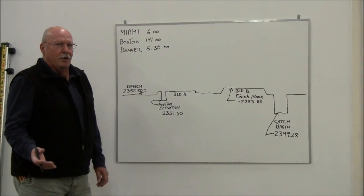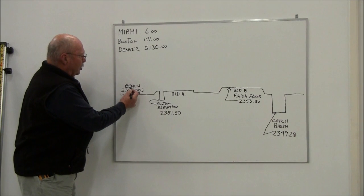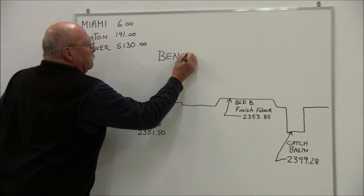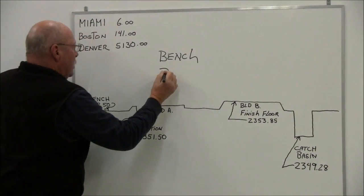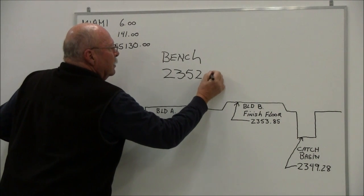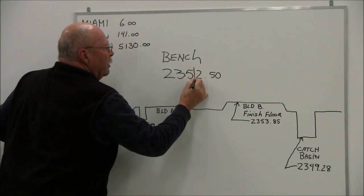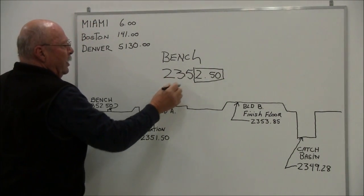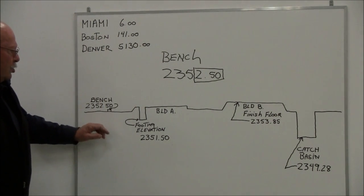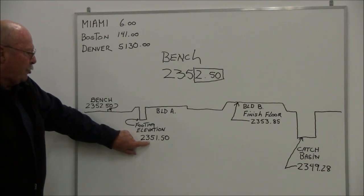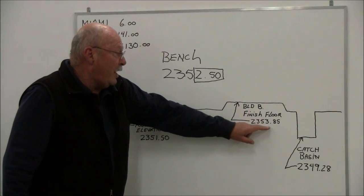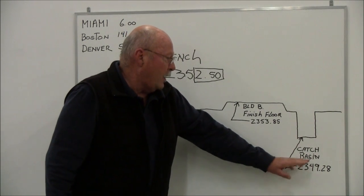Well, the grade rod's obviously not 2,000 feet high, so what we're going to use is the whole number and the last two digits. So I've got a bench on this job of 2,352 feet and 50 hundredths. What we're really going to be looking at is 250 on our grade rod, which is going to represent 2,352.50. For example, on this particular illustration, if I have a footing elevation, it might be depicted as 2,351.50. I might have a building finished floor at 2,353.85, and in this case I've got a catch basin of 2,349.28.